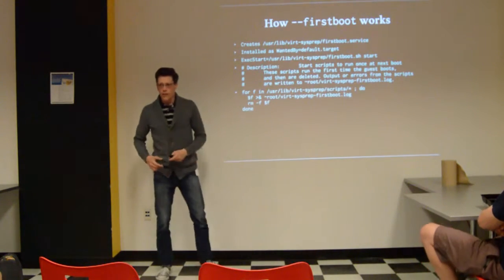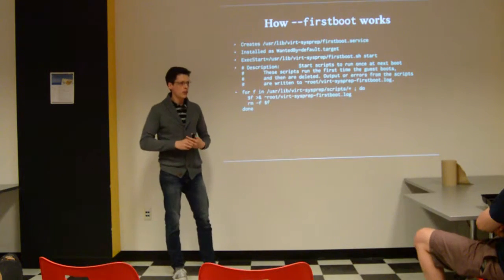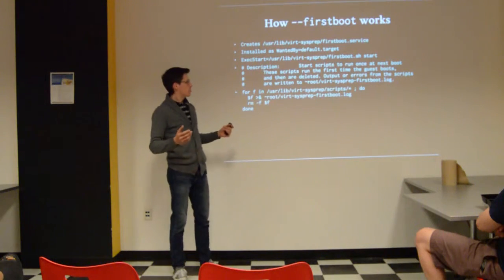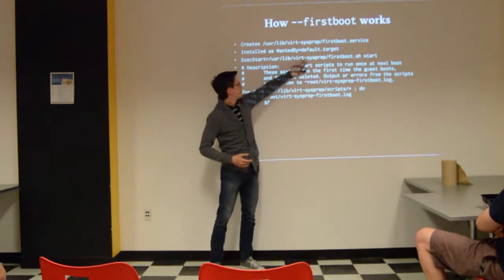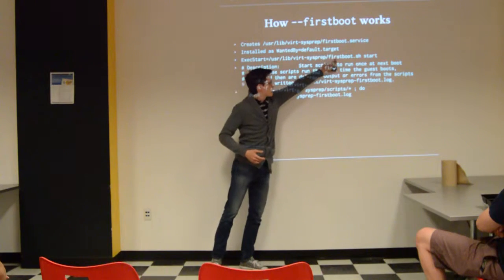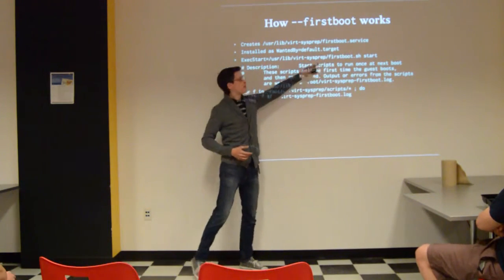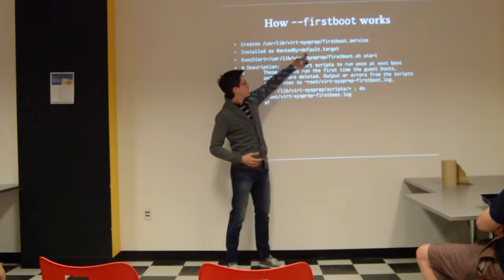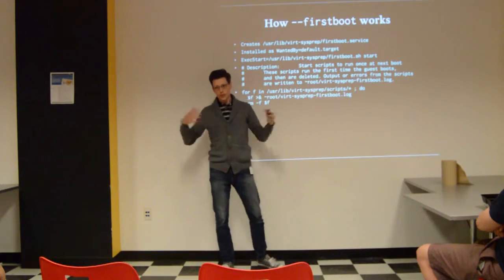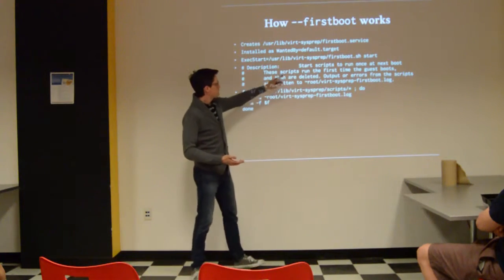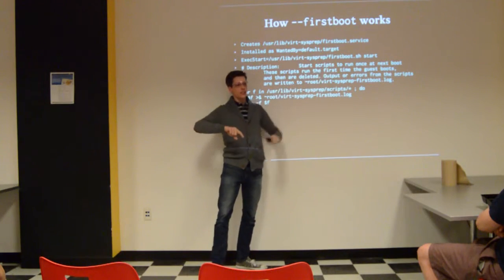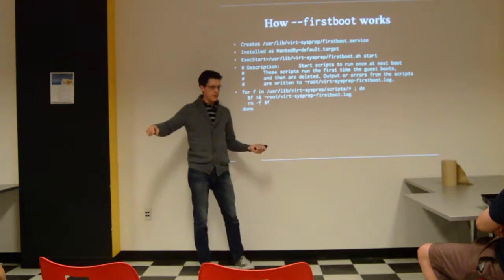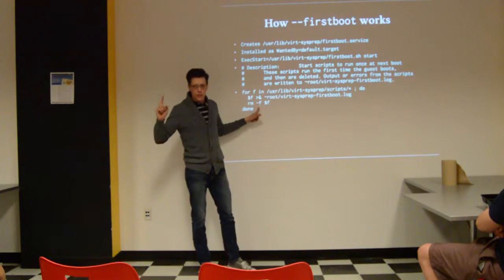There's one other thing: the first boot command and how it works. It's really simple and clever. It simply installs stuff in /usr/lib/virt-sysprep/. There's a first boot shell script that is called by a systemd service installed as wanted by the default target. So whenever the system boots, including the first time, it will execute that script. What that script does is call other scripts that were installed by virt-customize, and then deletes them, so they only get run once. And that's as simple as that.